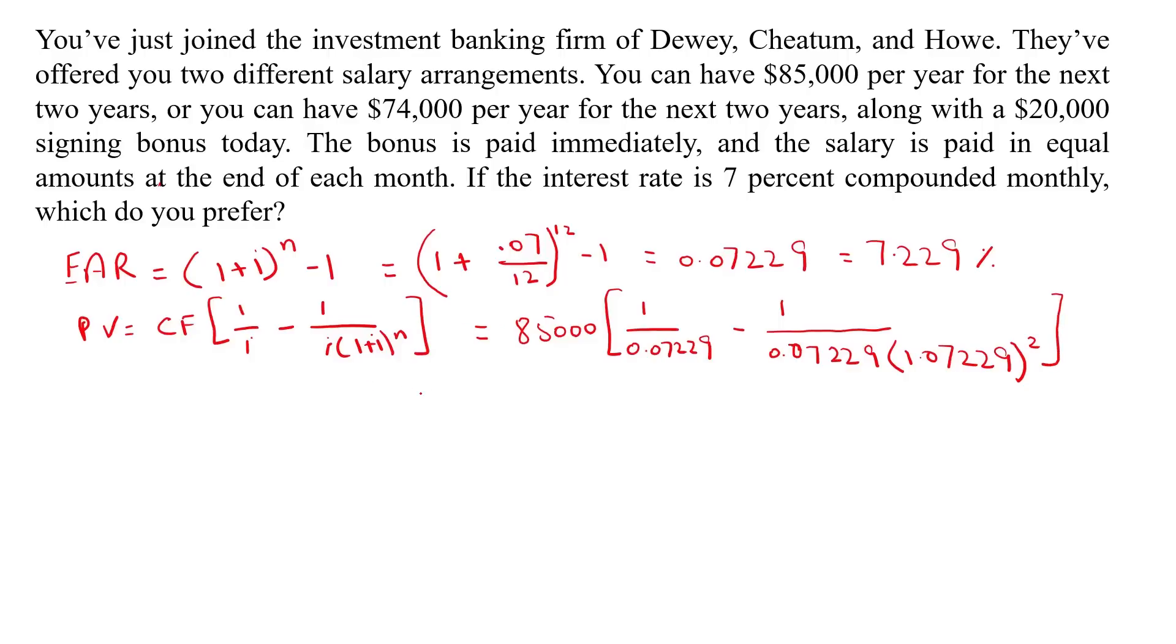And if we solve this, the present value will be $153,195. This means if we receive $85,000 per year with payments made on a monthly basis, then the present value will be $153,195. Now we are going for the second option, where the salary is $74,000 and there's a $20,000 bonus that will be paid immediately.